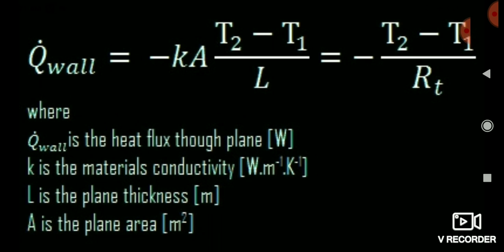Let's understand this with an example. Suppose you are touching an ice cube with your fingers. Your body temperature is 37°C while the ice cube is at 0°C. When you touch it, heat is transferred from your body to the ice cube, which is why it starts melting. Heat always flows from higher potential to lower potential.